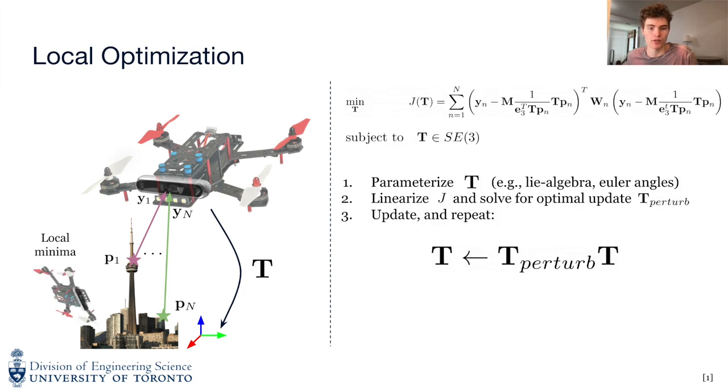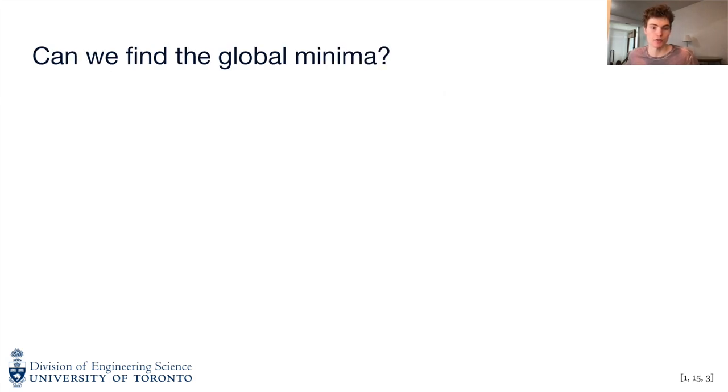Unfortunately, this optimization problem is non-convex and gradient descent methods may converge to local minima. For safety-critical applications, we need methods for finding global minima. To prevent catastrophes from local minima, two related approaches exist.